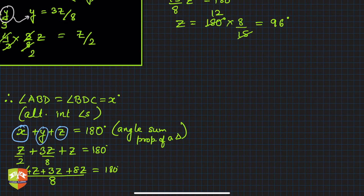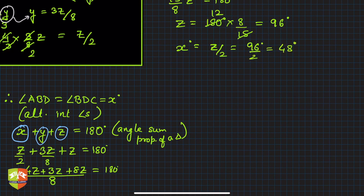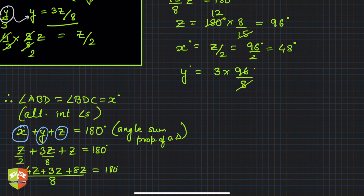So z = 96 degrees. Now x = z/2 = 96/2 = 48 degrees. And y = 3z/8 = 3 × 96/8 = 36 degrees. We can verify: x + y + z = 48 + 36 + 96 = 180 degrees. Correct!